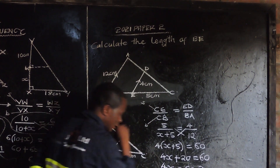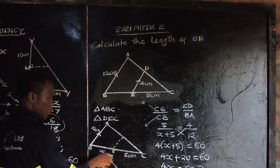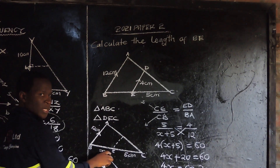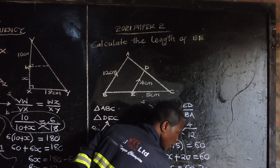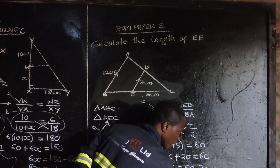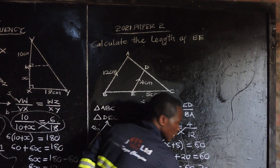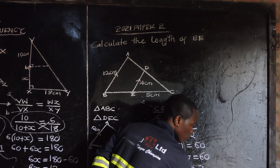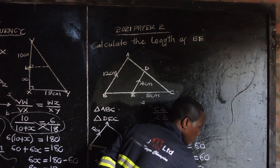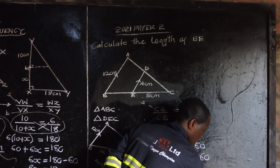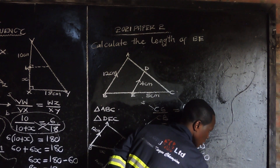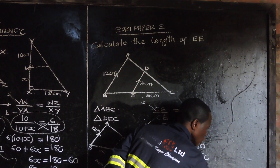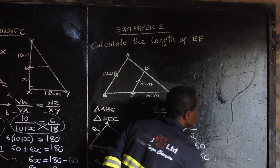Since what we want is BE, and BE is equal to X, therefore BE is 10 centimeters.